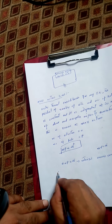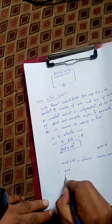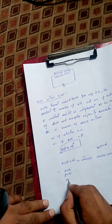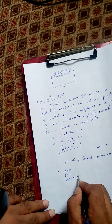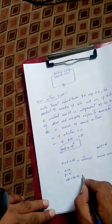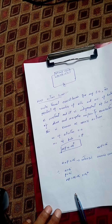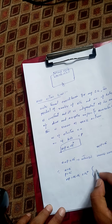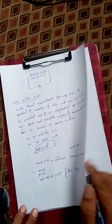Since n is equal to ni and p is equal to ni, if we take the product n into p, it is equal to ni into ni, which is equal to ni squared. Now this is true for the intrinsic semiconductor.